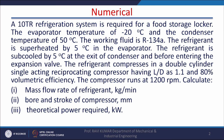A 10 TR refrigeration system is required for a food storage locker. The evaporator temperature is minus 20 degree centigrade and the condenser temperature is 50 degree centigrade. The working fluid is R134A. The refrigerant is superheated by 5 degree centigrade at the exit of the evaporator, and sub-cooled by 5 degree centigrade at the exit of the condenser before entering the expansion valve. The refrigerant is compressed in a double cylinder single acting reciprocating compressor having L by D as 1.1, with 80 percent volumetric efficiency. The compressor runs at 1200 rpm. Calculate: mass flow rate of refrigerant in kg per minute, bore and stroke of compressor in millimeters, and theoretical power required in kilowatts.